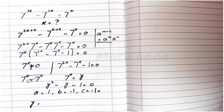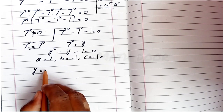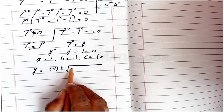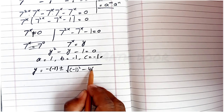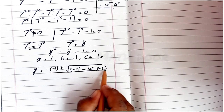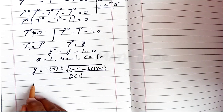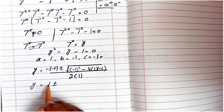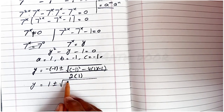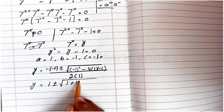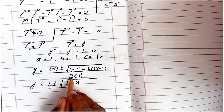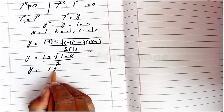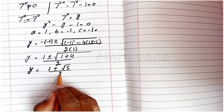Applying the quadratic formula: y equals minus b, which is minus (minus 1), plus or minus the square root of b squared minus 4ac, all over 2a. Since minus times minus is positive 1, and minus 4 times 1 times (minus 1) is positive 4, this simplifies to y equals 1 plus or minus the square root of 1 plus 4, over 2, giving y equals 1 plus or minus the square root of 5, over 2.